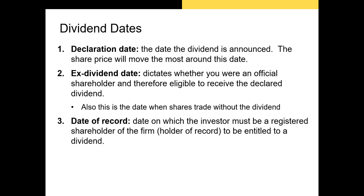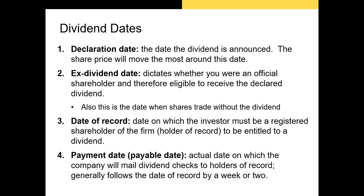The date of record is the date the shareholder of record is identified, usually the day after the ex-dividend date — because it takes about a day for transactions to clear. The final date is the payment date. Historically checks went out in the mail, but nowadays the cash is transmitted electronically to your brokerage account.